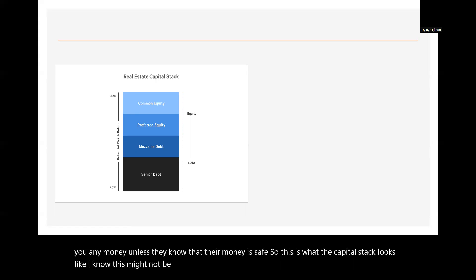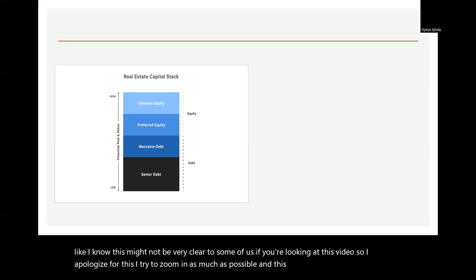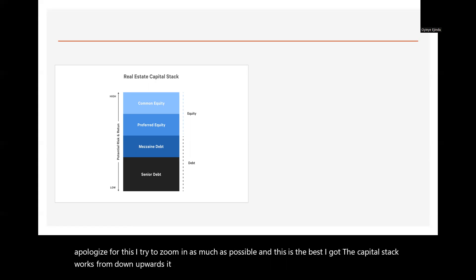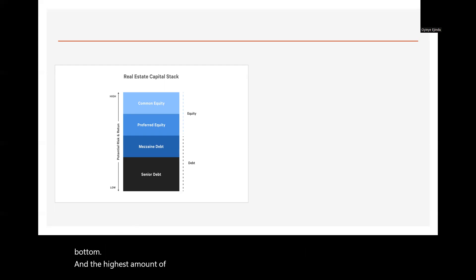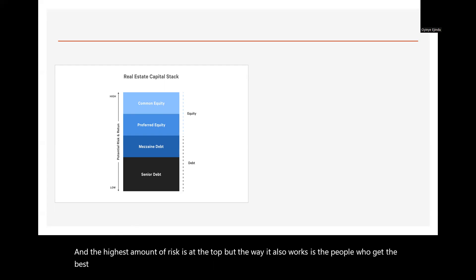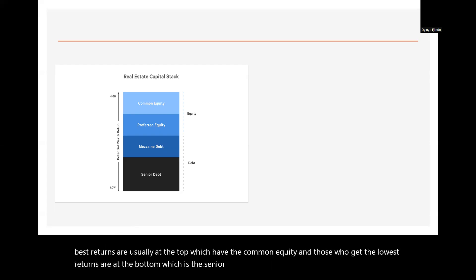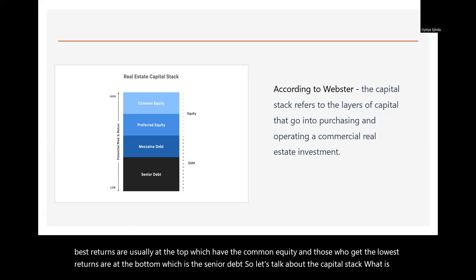No one is going to want to give you money unless they know their money is safe. So this is what the capital stack looks like. I apologize if it's not very clear on screen — I tried to zoom in as much as possible. The capital stack works from the bottom upward; it never starts at the top. The lowest amount of risk is at the bottom and the highest amount of risk is at the top.